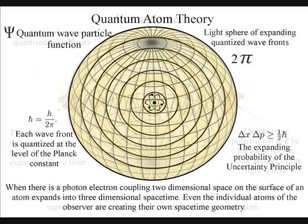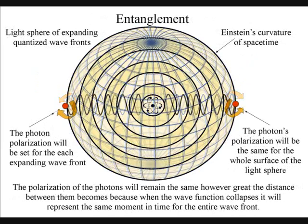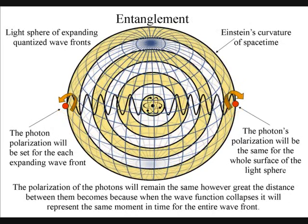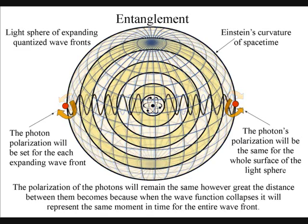The polarization of the light will be the same for the entire surface of the light sphere, creating quantum entanglement and the symmetry and geometry of spacetime.